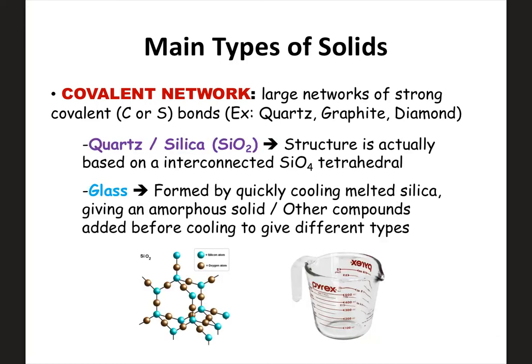Other covalent network solids include quartz or silica SiO2, which is basically sand — its structure has SiO4 tetrahedrals connected together. Glass is also a network solid, formed by quick cooling of melted silica to give an amorphous solid. Other compounds are added before cooling to give different types of glass. These covalent network solids all have large networks of strong covalent bonds that must be broken in order for them to melt or boil.